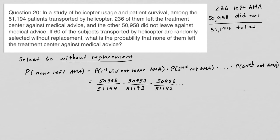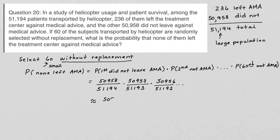We don't need to do that, because if we are selecting from a very large population — here we have a large population — and the number in the sample we're selecting is 60, this number is small compared with 50,000. So because we have a small sample, I can approximate this probability by just taking the first probability and raising it to the 60th power, treating it as if it's with replacement, and the values will be pretty close together.